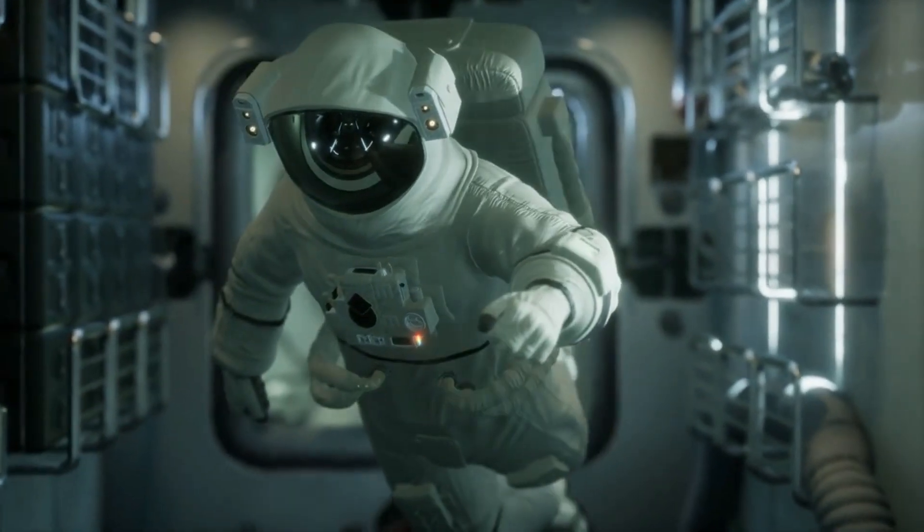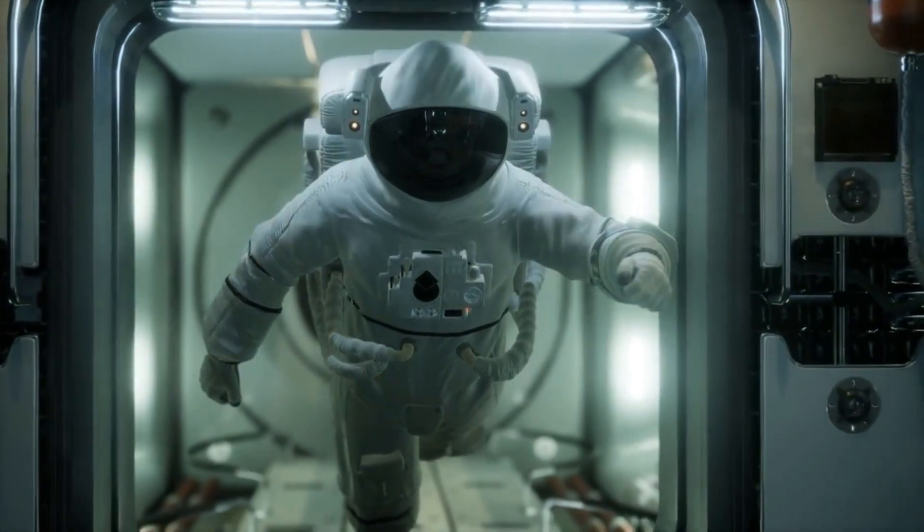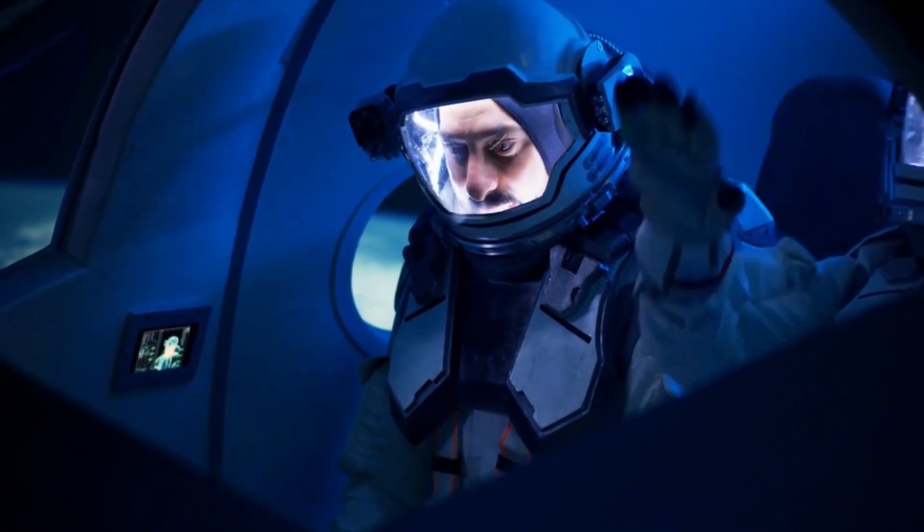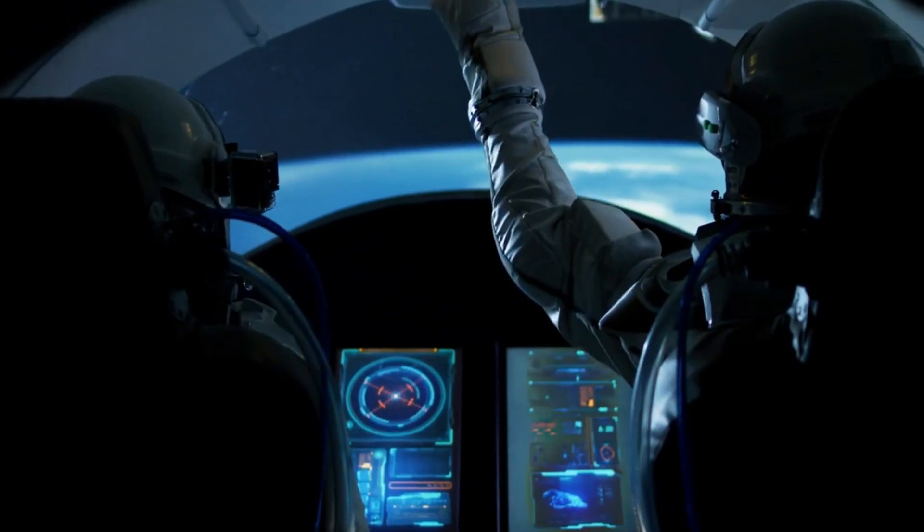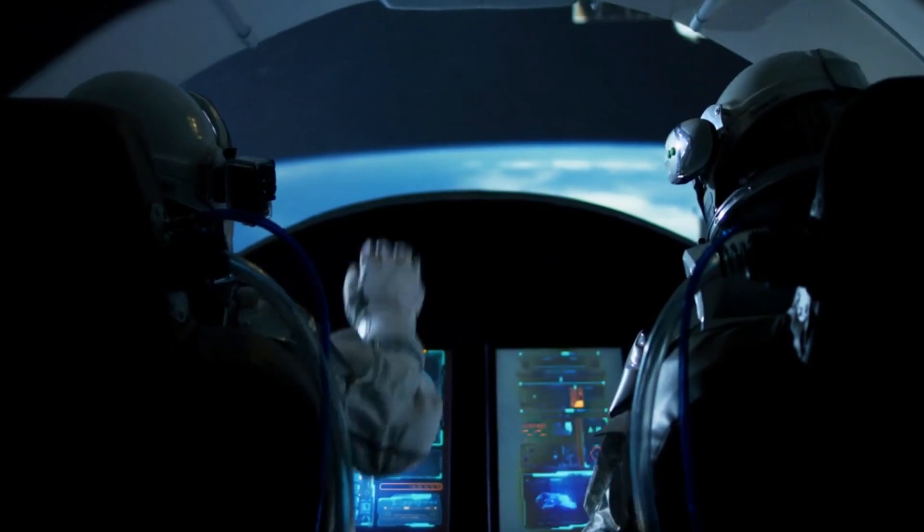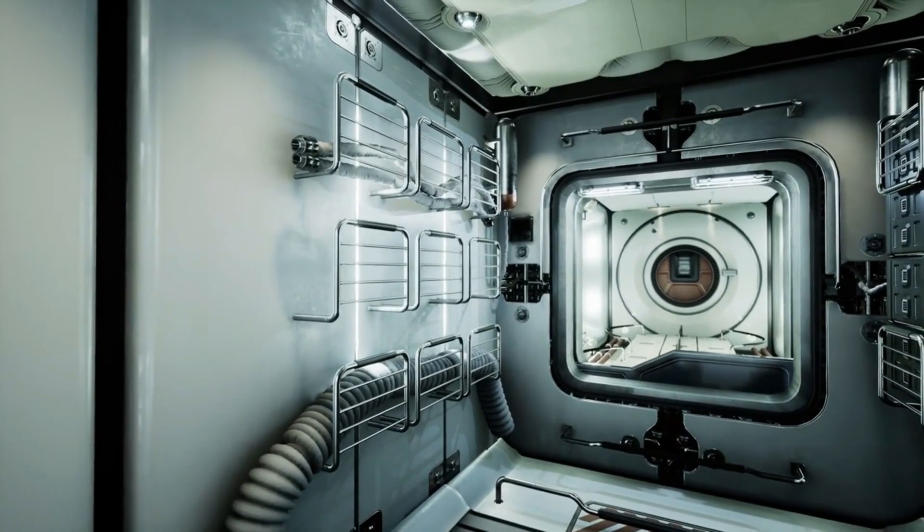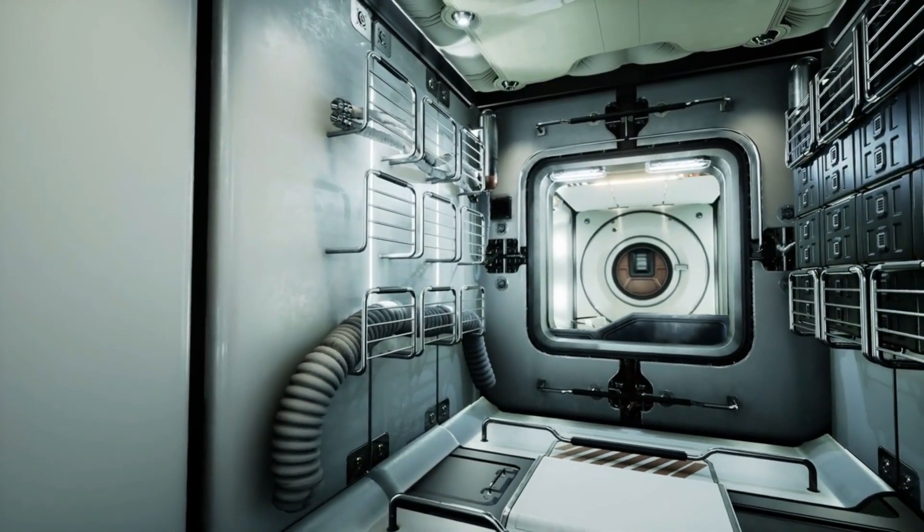Similarly, astronauts' suits are built to withstand temperatures from minus 250 degrees Fahrenheit to 250 degrees Fahrenheit. The suits are white to reflect light while in the sunshine, and heaters are placed throughout the inside to keep astronauts warm in the dark. They are also designed to provide consistent pressure and oxygen and resist damage from micrometeorites and the Sun's ultraviolet radiation.